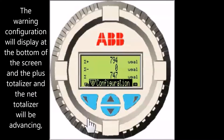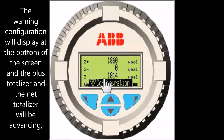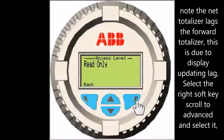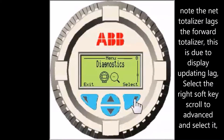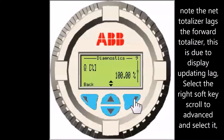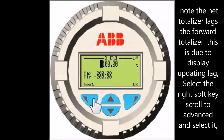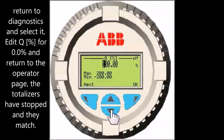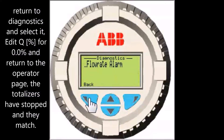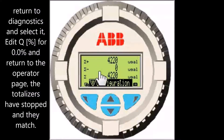The warning configuration will display at the bottom of the screen. The forward and net totalizers will be advancing. Note the net totalizer lags the forward totalizer — this is due to display updating lag. Select the right soft key, scroll to advanced and select it. Return to diagnostics and select it. Edit Q percent for 0.0 percent and return to the operator page. The totalizers have stopped and they match.